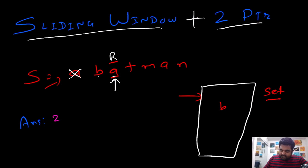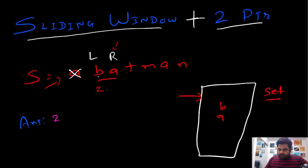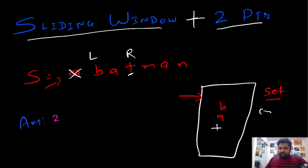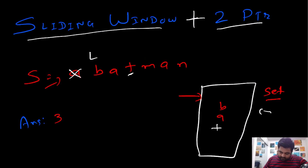Now the left pointer is at 'b' and the right pointer is at 'a'. The current values in the window are b and a, so we add 'a' to the hash set. The length is still two, so we don't update the answer. We move the right pointer to 't' — it doesn't exist in the hash set, so we add 't' and update the answer to three. Then the right pointer moves to 'm' — it's also new, so we add 'm' and update the answer to four.